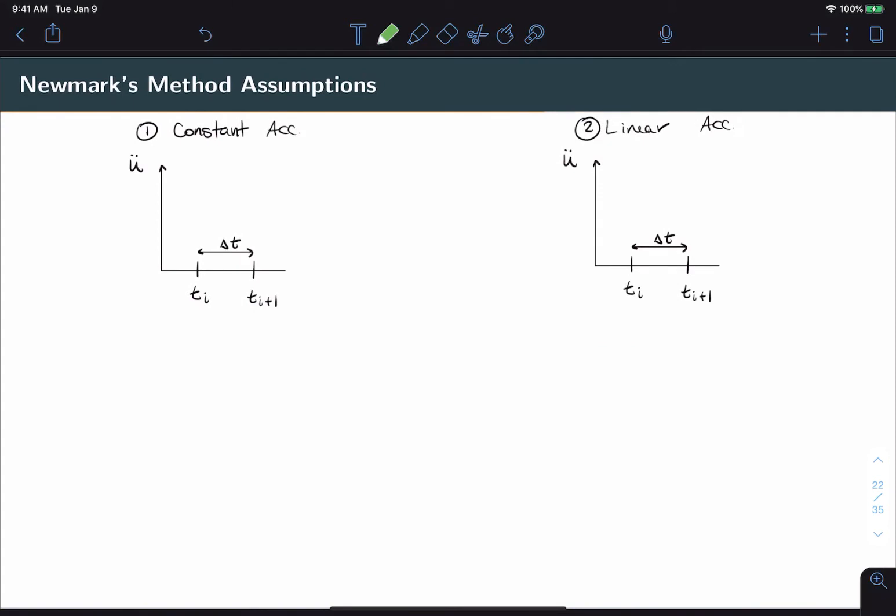Newmark's method makes a fundamental assumption about the behavior of the acceleration between time intervals. That assumption can come in two variations. One is the constant acceleration assumption, which I'll demonstrate on the left, and one is the linear acceleration assumption, which I'll demonstrate on the right. Let's demonstrate variation one, constant acceleration, first.